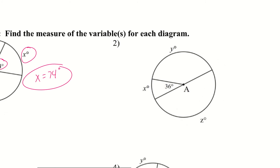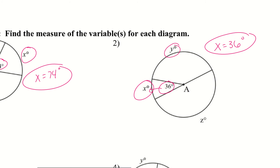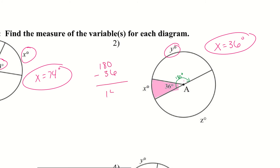Let's take a look at number two. We have a few variables. Starting with 36, since that's the number we see — the arc measure means x equals 36. For y, there's no number directly, but I see a straight line, so this whole half — the semicircle — is 180 degrees. So 180 minus 36 gives me 144. Therefore y equals 144 degrees.